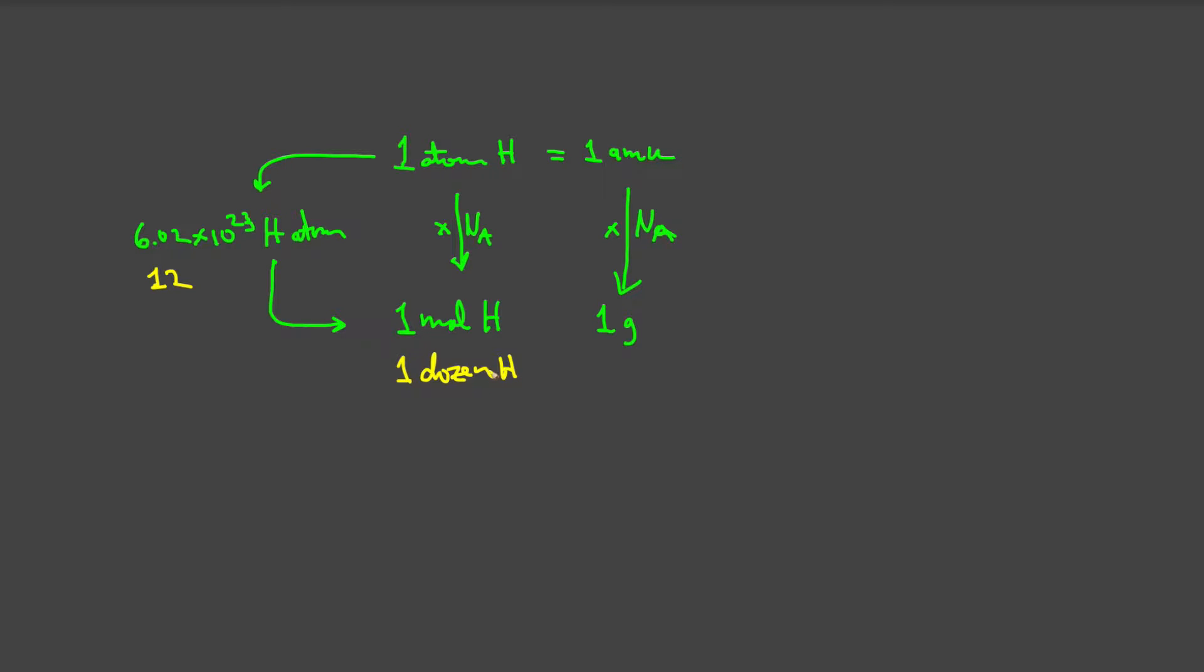But for whatever reason, it becomes difficult to think, if I have 6.02 times 10 to the 23rd, I can't call it a mole. But indeed, that's what we've done by convention.